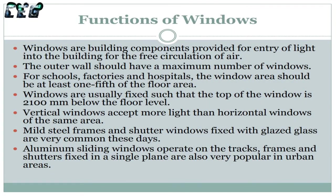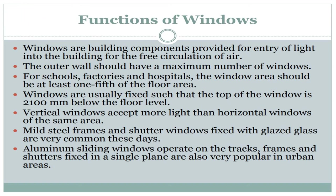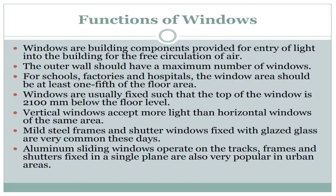Functions of windows: Windows are provided for entry of light into the building and for free circulation of air. The outer wall should have a maximum number of windows. For schools, factories, and hospitals, the window area should be at least one-fifth of the floor area. Windows are usually fixed such that the top of the window is 2,100 millimeters below the floor level. Vertical windows accept more light than horizontal windows of the same area. Mild steel frames with glazed glass and aluminum sliding windows operating on tracks are very common and popular in urban areas.